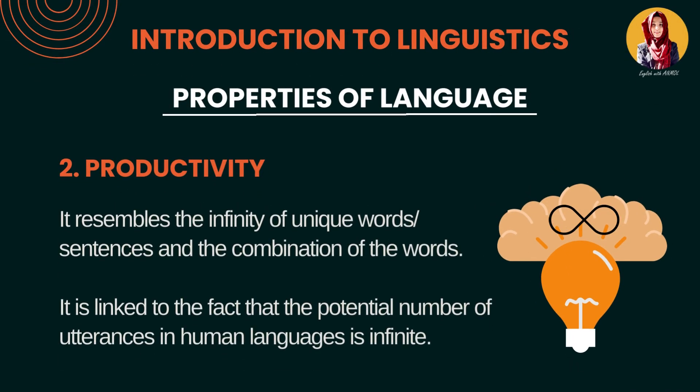Productivity. Productivity ek tarah se creativity hai. Hamare paas language mein limited number of letters hain — for example, English language mein limited letters hain. Un letters ko hum log different ways se combine karke different words banaate hain. Phir un words ko mukhtalif tariqon se mila ke different sentences banaate hain. Is tarah ki combination ko kaha jaata hai productivity. Language is productive — hum limited cheezoun mein se unlimited cheezein bana sakte hain, finite mein se infinite structures develop kar sakte hain.